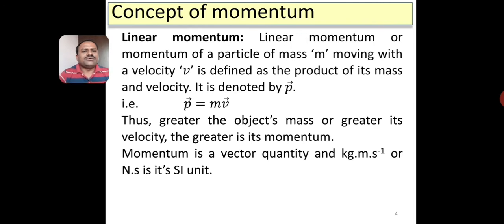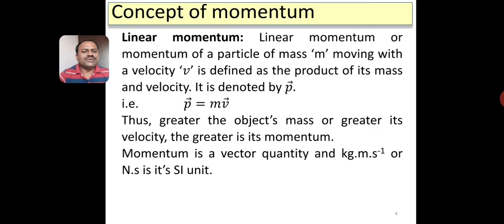Linear momentum, or momentum of a particle of mass m moving with a velocity v, is defined as the product of its mass and velocity. Linear momentum can also be defined as the total quantity of motion associated with any moving body. It is generally denoted by p and expressed as p is equal to m into v, the velocity of the particle.